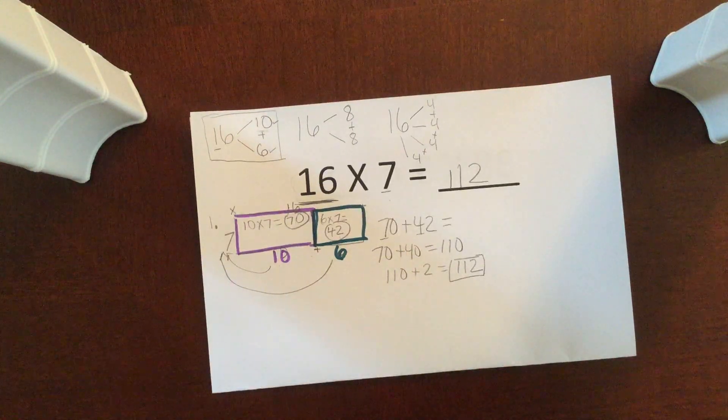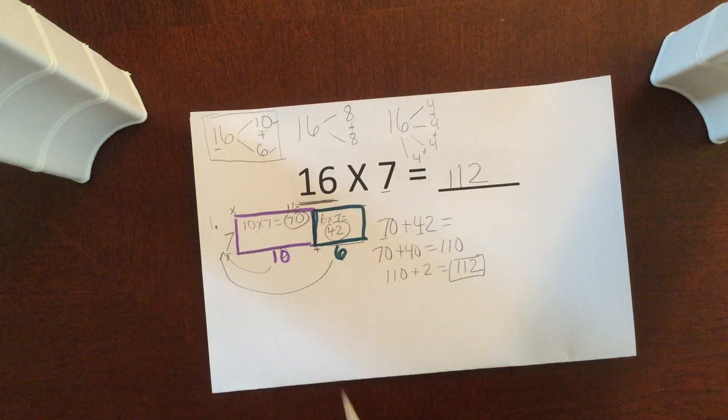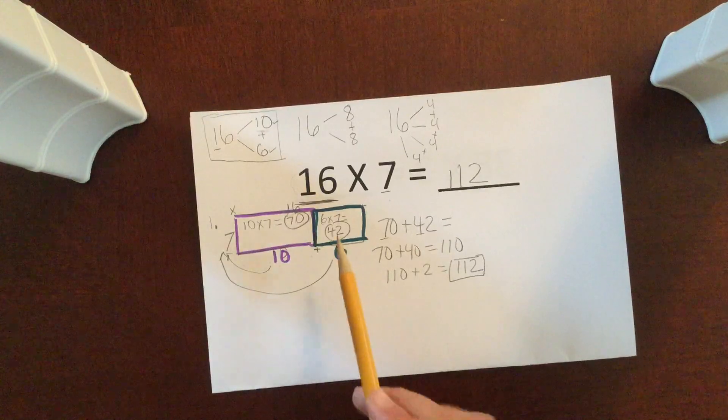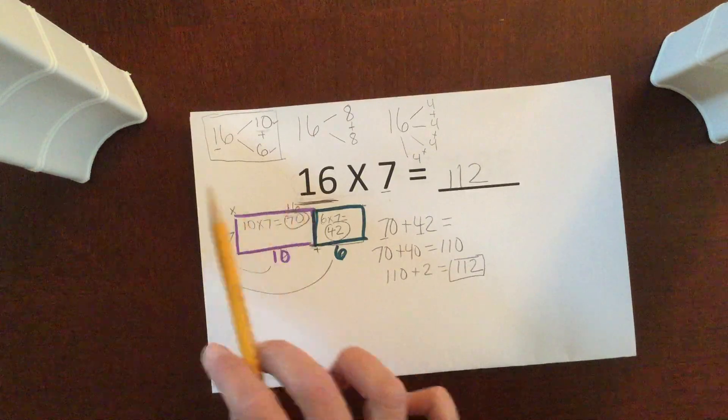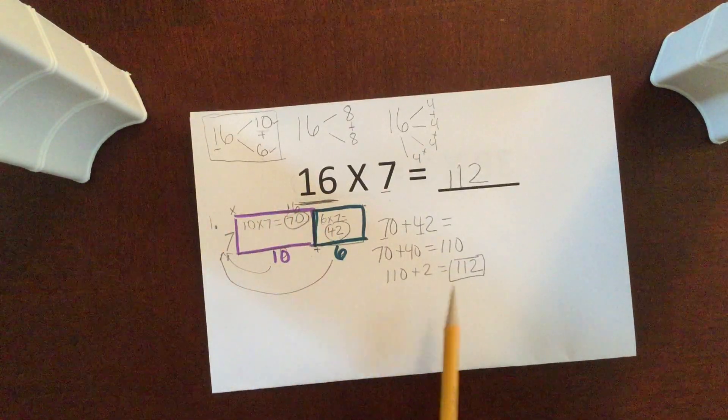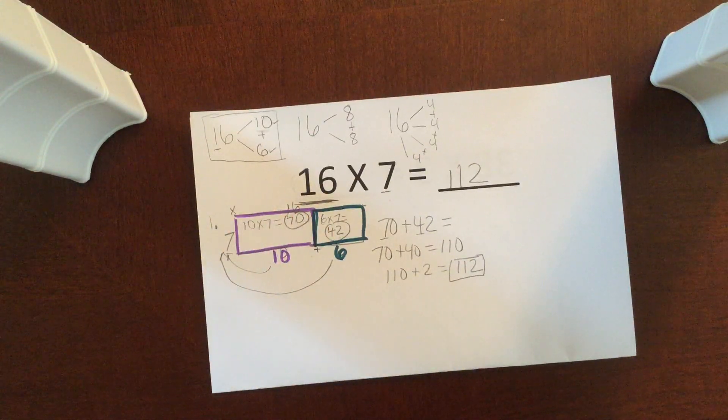So I hope this was helpful. This is a strategy we've been using. You can use these steps with any harder multiplication fact. You draw your model, you break up your numbers, draw your model, and then solve for your final answer. Thanks for listening.